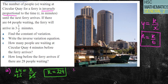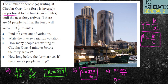Part B asks me to write the inverse variation equation. I'll substitute back in to get n equals 224 divided by t. That's my answer for B. Part C: how many people are waiting four minutes before the ferry arrives? n equals 224 divided by 4, which equals 56 people.